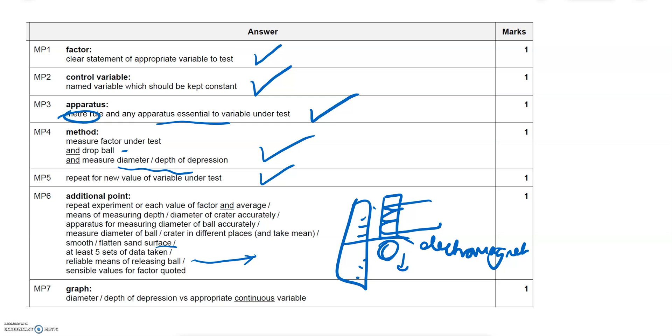Now the graph, we've also mentioned depth of the depression or diameter of the depression in this case against the variable which was the mass of the ball. So you'd get full marks with that method there.